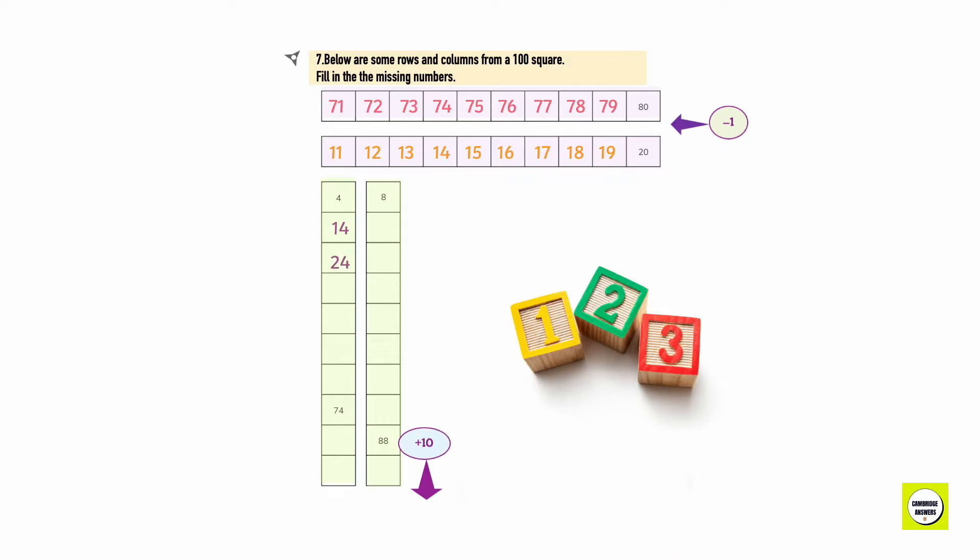4 plus 10 is 14, 24, 34, 44, 54, 64, 74, 84, 94. 8 plus 10 is 18, 28, 38, 48, 58, 68, 78, 88, and 98.